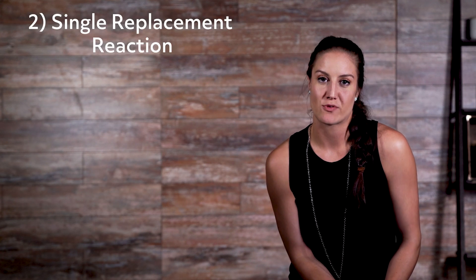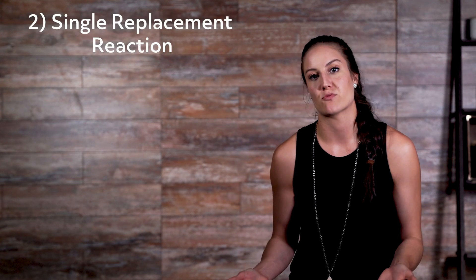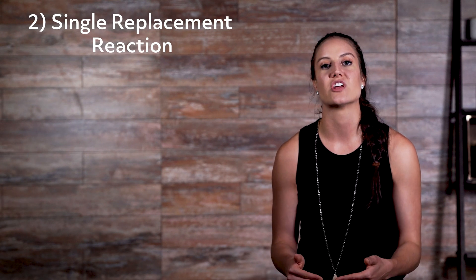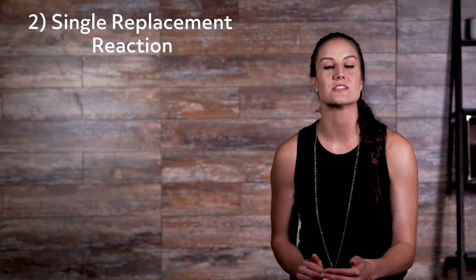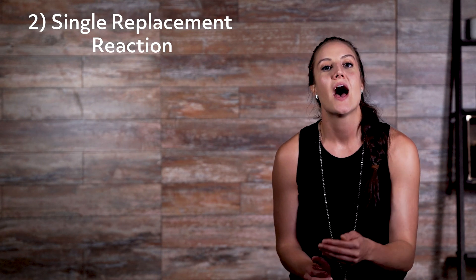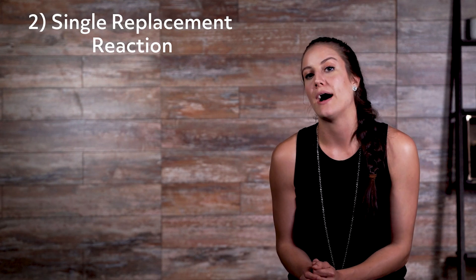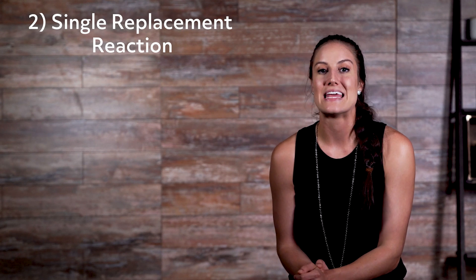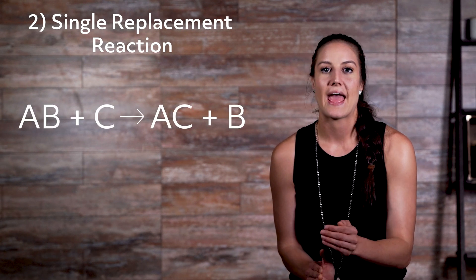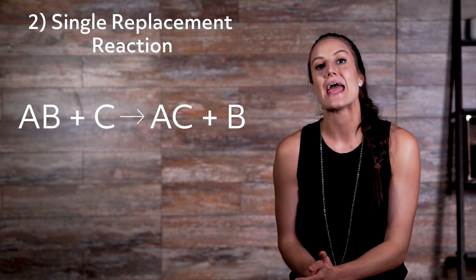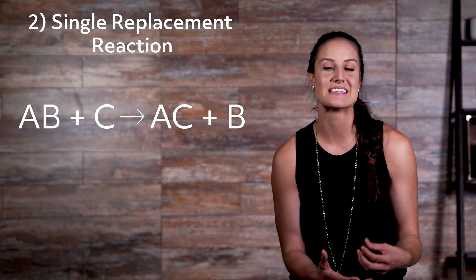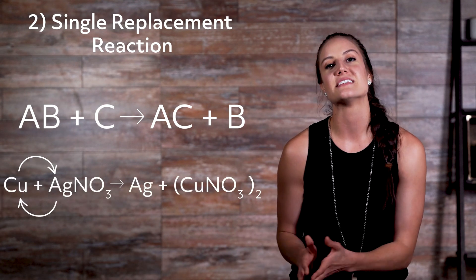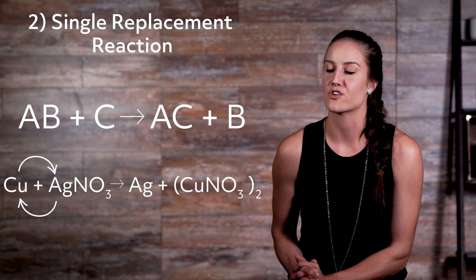Number two: single replacement reaction, also known as displacement reaction, can be defined as a chemical reaction in which one element displaces or replaces a comparable element in the compound, causing a chemical change in the compound. Here is what that looks like in equation form: AB + C yields AC + B. As you can see in this equation, C has stepped in and replaced or displaced B. An example of this is the combination of copper and silver nitrate.